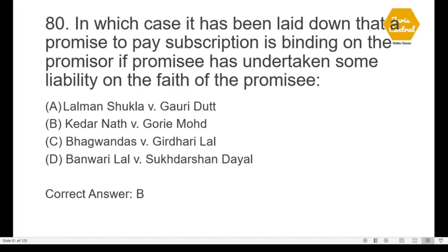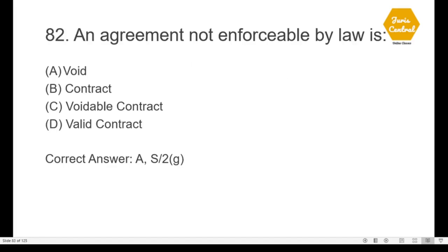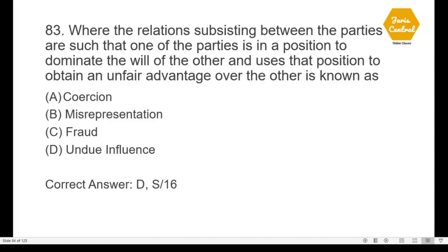Question 80: In which case was it laid down that a promise to pay subscription is binding if the promisee has undertaken some liability on the faith of the promise? — option B: Kedar Nath versus Gorie Mohamed. Question 81: Is past consideration for a promise valid to create a contract? — option A: it is valid only in Indian law and not in English law. Question 82: An agreement not enforceable by law is a void agreement, given under Section 2(g) of the Indian Contract Act. Question 83: Where one party is in a position to dominate the will of the other and uses that position to obtain an unfair advantage, this is known as — option D: undue influence, given under Section 16 of the Indian Contract Act.